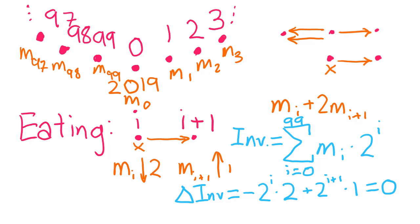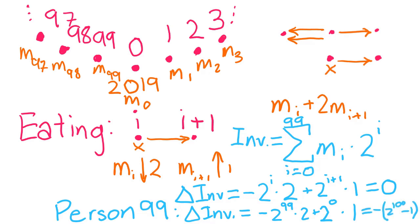However, there is one slight catch. That doesn't work so well with person 99, as if they eat, they decrease the invariant by 2 times 2^99 but increase it by only 2^0 times 1. So, there's a crazy net change of negative 2^100 - 1. We'll have to deal with that somehow, but before that, let's look at the sharing process under the invariant.